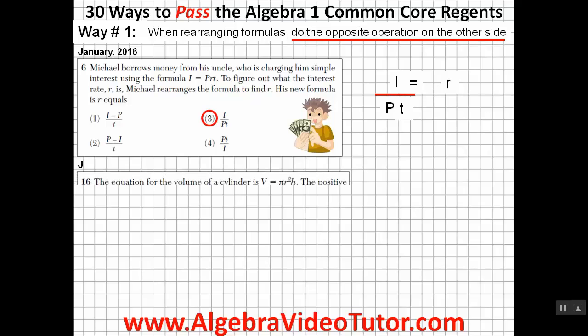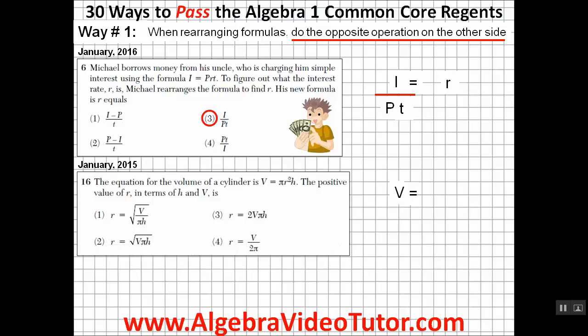In this next question from the January 2015 Algebra I Regents, don't let the different formula throw you off. Once again, we need to rearrange the formula to solve for R, so do the opposite operation on the other side, dividing V by pi and H, which will effectively eliminate the three choices that don't reflect this.